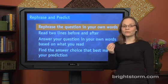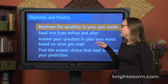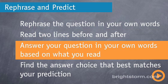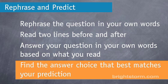Once you've rephrased the question in a way that works for you, then you should go to wherever you're told to look and read two lines before and after that place. Afterwards, you should answer your question — the one you've rephrased — in your own words, and make sure you do that based on what you just read. Lastly, find the answer choice that best matches your prediction among the answer choices available to you.